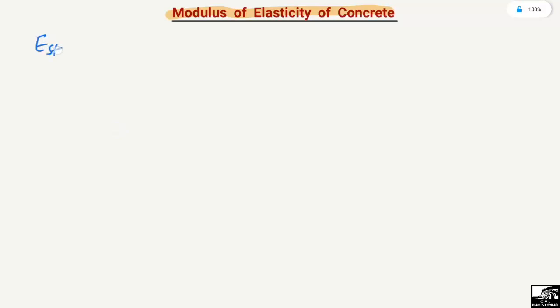How can we define the modulus of elasticity of concrete? We are quite familiar with the modulus of elasticity of steel, which is equal to 200 GPa or 29,000 ksi.